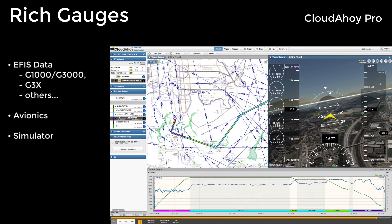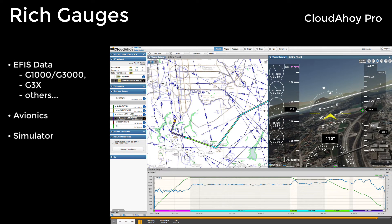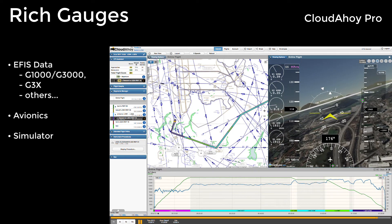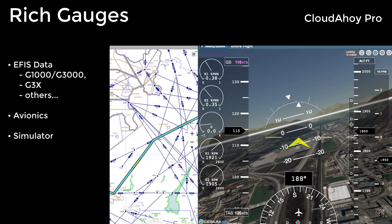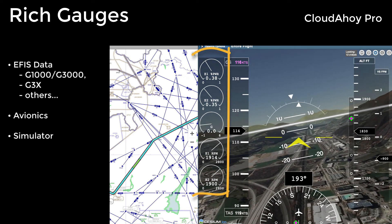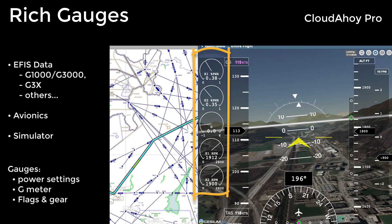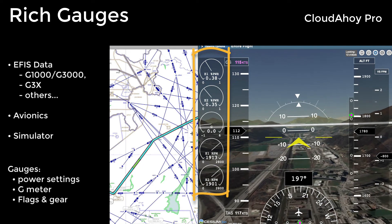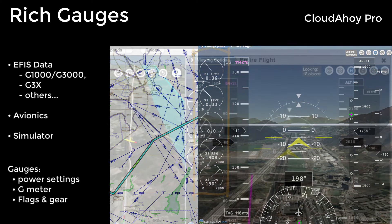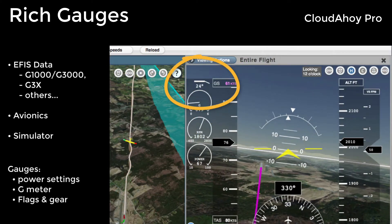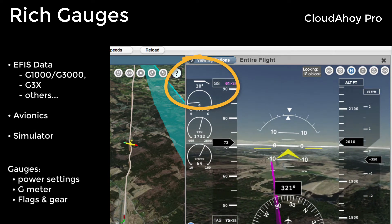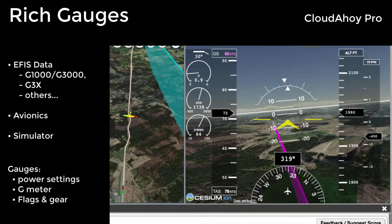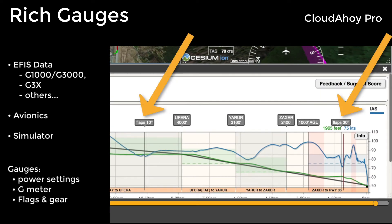If your flight data includes rich data from the plane's avionics or from a simulator, Cloud Ahoy Pro will display additional information. For example, in this G1000 data from a twin star, you can see the power setting and RPM of the two engines, plus the G-meter. If the data includes flaps or gear data, like the flaps in this Redbird simulation flight, they will also be annotated and displayed on the altitude profile view.